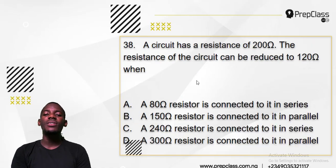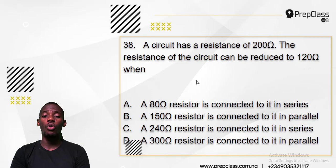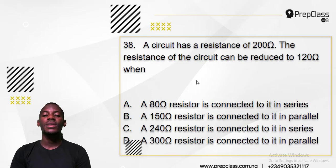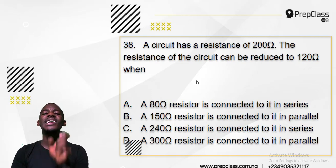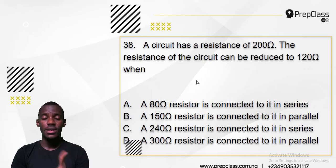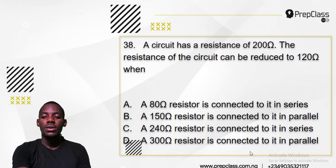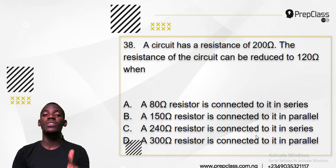A circuit has a resistance of 200 ohms. The resistance of the circuit can be reduced to 120 ohms when — how can you reduce the resistance of a circuit? When you hear the word 'reducing resistance', resistance only gets reduced in a parallel connection. Series connections increase resistance; only parallel connections reduce resistance. So options involving series connections are wrong — A is wrong and B is wrong — because only connections in parallel reduce resistance.